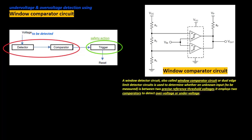A window detector circuit, also called a window comparator circuit or dual edge limit detector circuit, is used to determine whether an unknown input is between two precise reference threshold voltages. It employs two comparators to detect overvoltage or undervoltage.